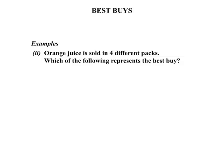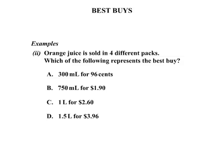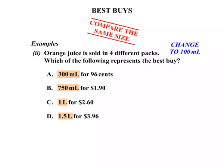Our second example: Orange Juice is sold in 4 different packs. Which of the following represents the best buy? There are 4 packs — A, B, C and D — in sizes 300ml, 750ml, 1L, and 1.5L. Again they are all different sizes, so we need to compare the same size. What we are going to do is change them all to 100ml.